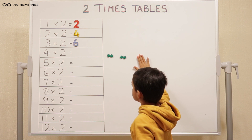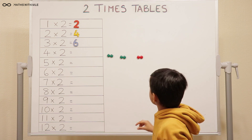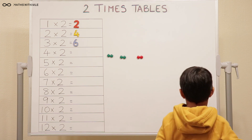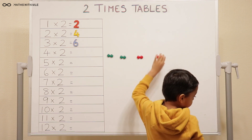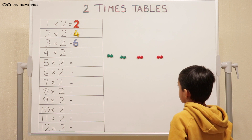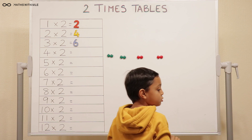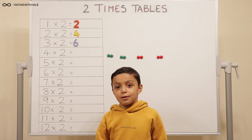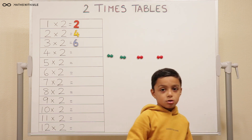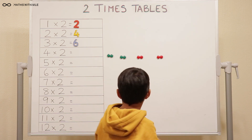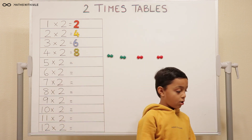What does the next question say? Four times two. So let's get our fourth group of two. So you've got four lots of twos, which is four times two. Two, four, six, eight. So that equals eight.